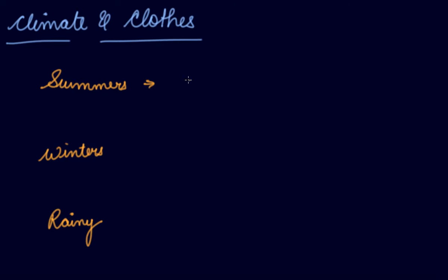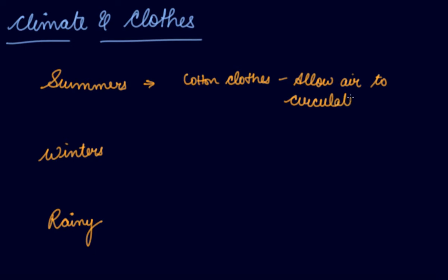In summer, we prefer wearing loose, light-colored cotton clothes. Cotton clothes allow air to circulate freely, which keeps our body cool and heat-free. White cotton clothes reflect heat and keep the body cool, absorb sweat, and also prevent skin irritation.